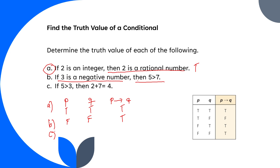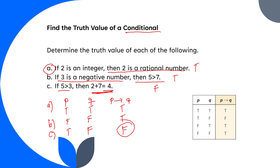Letter c: 'if five is greater than three then two plus seven is equal to four.' Five is greater than three — true (p is true). Two plus seven equals four — false (q is false). Since p is true and q is false, this is the only false case, so the truth value of this conditional statement is false.